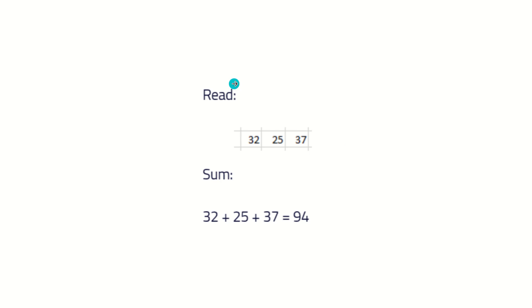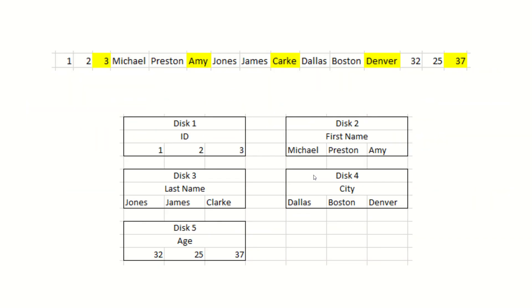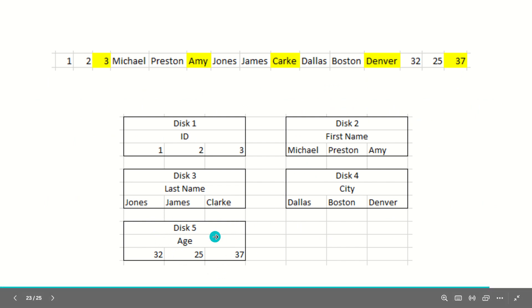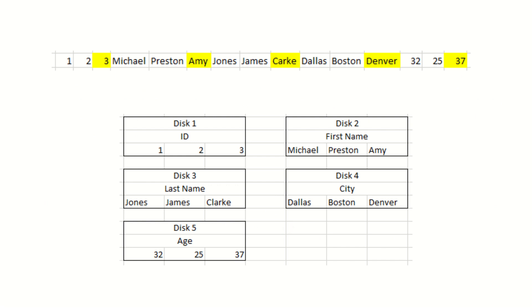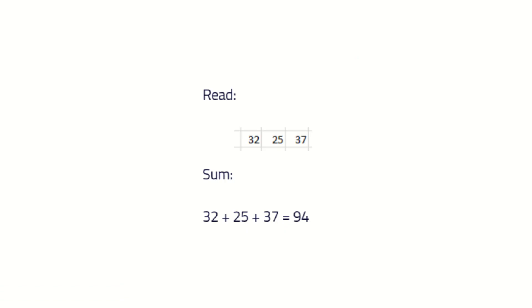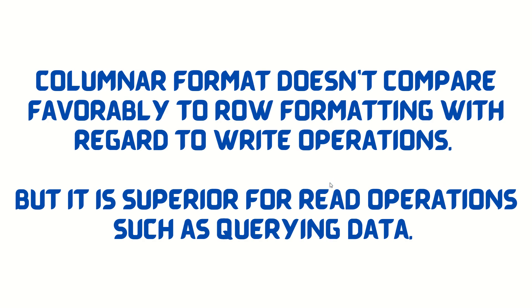For example, if we need to obtain the sum of ages for individuals in the data, we just have to go to the single storage location containing information on ages — disk 5, which contains all the ages. This saves a large amount of memory and time by skipping over non-relevant data very quickly. All reads come from the sequential data stored on a single disk. Efficient querying is not the only reason columnar formatted data is popular — it also allows for efficient compression, which we'll discuss in more detail in the next video.